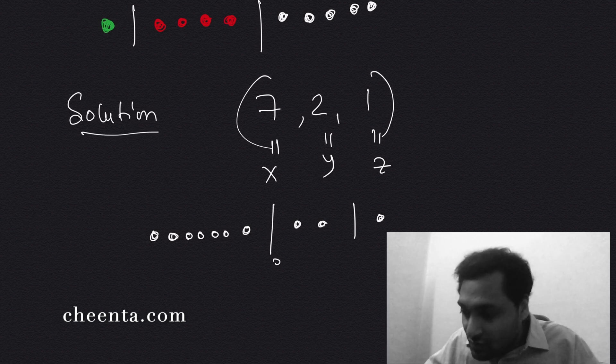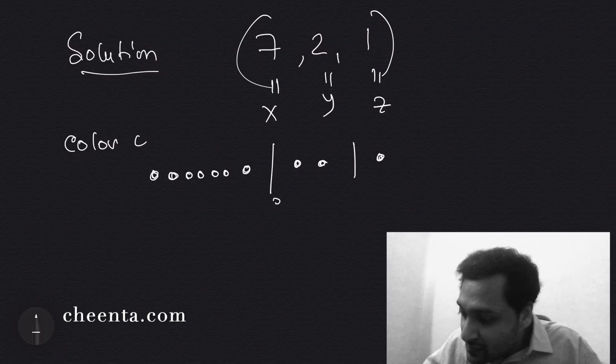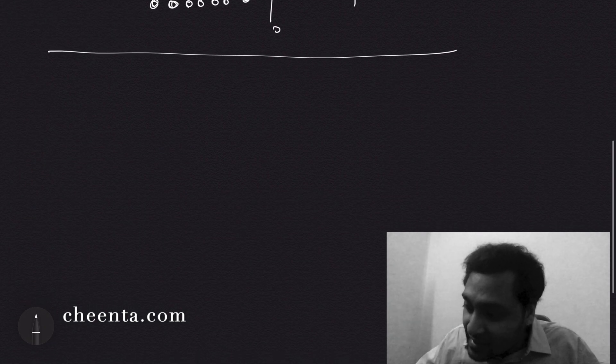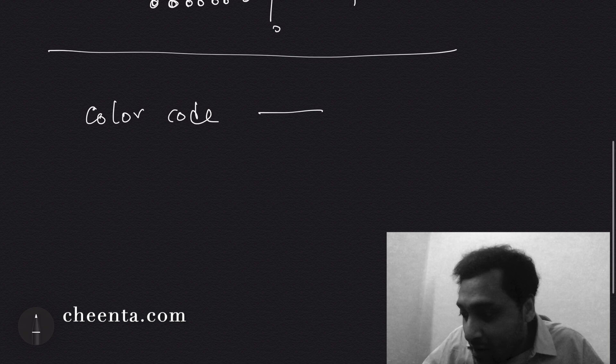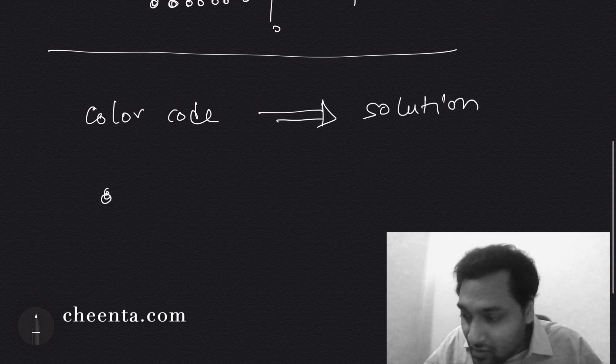So that's given a solution, you can find a color code. And given a color code, so that's the other way down now, given a color code, you can find a solution, a unique solution.